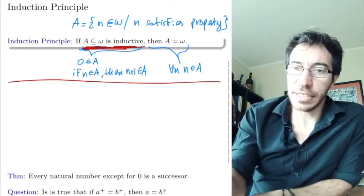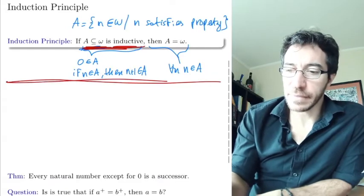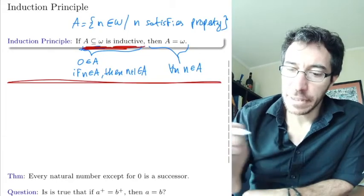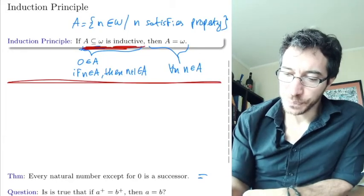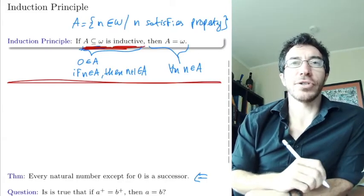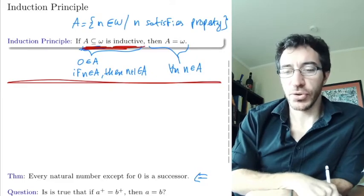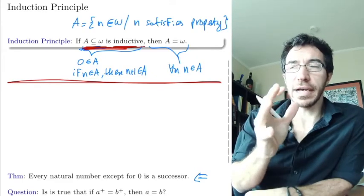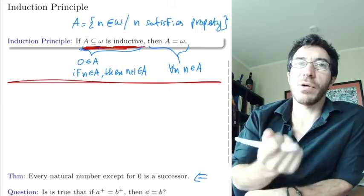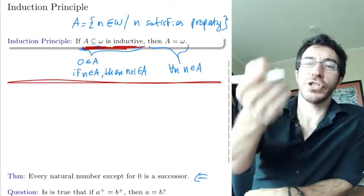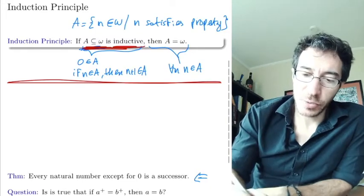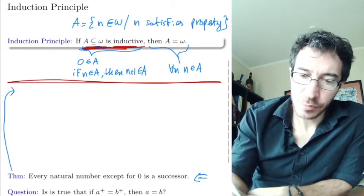So let's see a simple example of how to use induction. We want to prove that every natural number except for zero is a successor of somebody. So zero is not the successor of anybody, but all the other ones are the successor of somebody. That's going to allow us to subtract one: if you're not zero, you can subtract one and get a number.